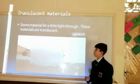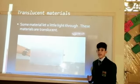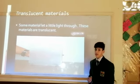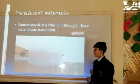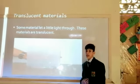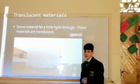Translucent material. Some materials let a little light through. These materials are translucent. You can see it is a plastic and it came towards better alignment.